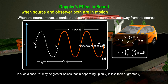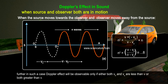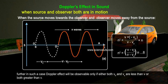In such a case, n'' may be greater or less than n depending upon whether v₀ is less than or greater than vs. Further, the Doppler effect will be observable only if either both v₀ and vs are less than v, or both are greater than v.